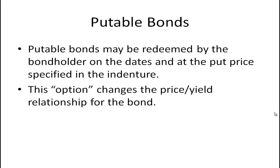Let's take a look at a second kind of bond with an embedded option, and that's a putable bond. A putable bond is one that can be redeemed by the bondholder on the dates and at the put price specified in the indenture. If it's a putable bond, the person who owns the bond can redeem it early. This changes the price-yield relationship.